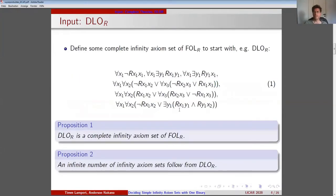Our algorithm needs some complete infinity axiom set of FOLR to start with. In our paper, we establish a reduction of the dense linear order axiom set with identity, known as DLOO, to FOLR, DLOR for short. Formula 1 presents our reduction to DLOR.